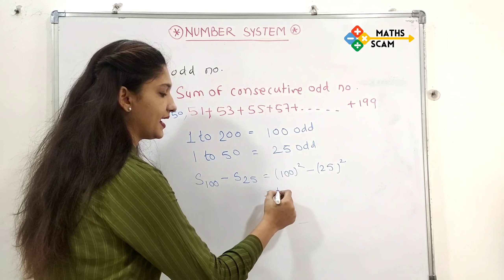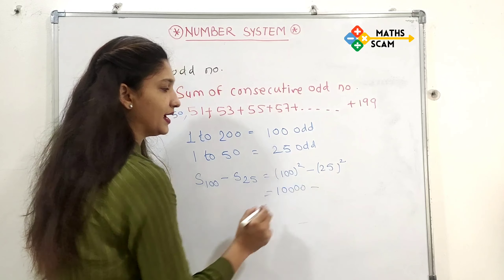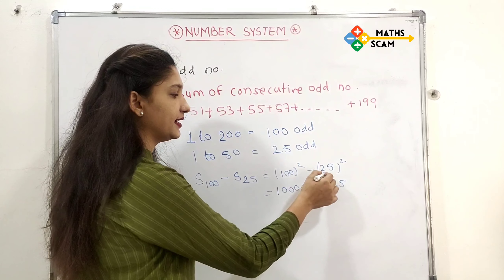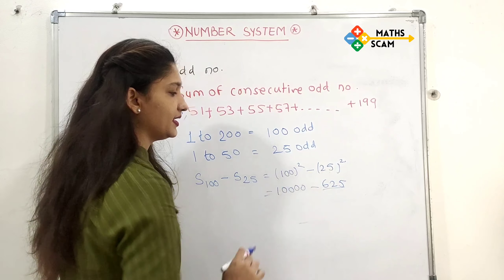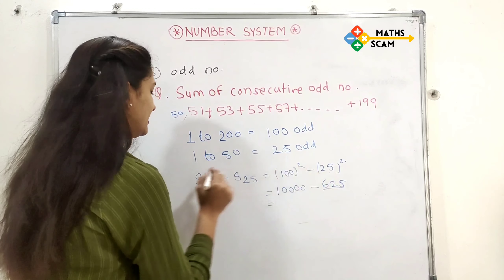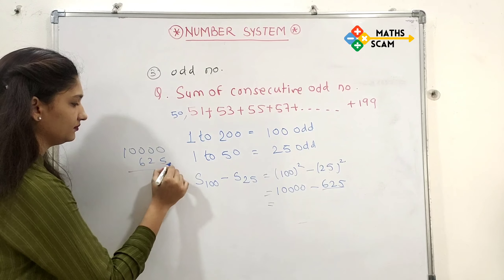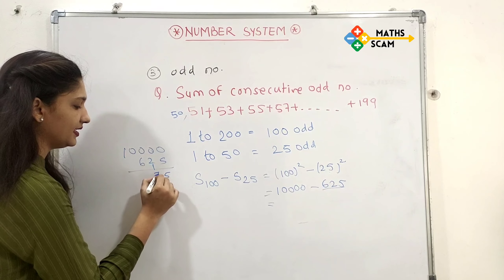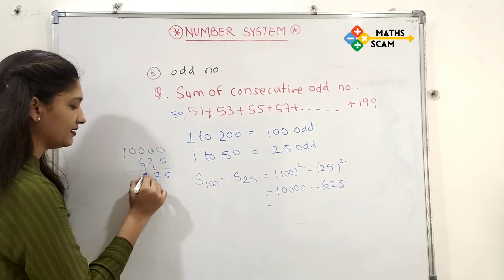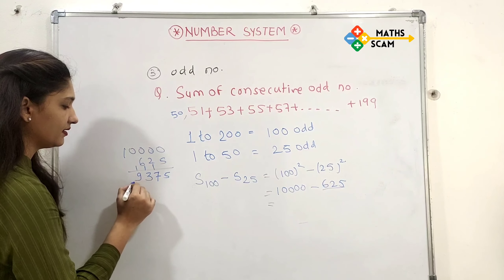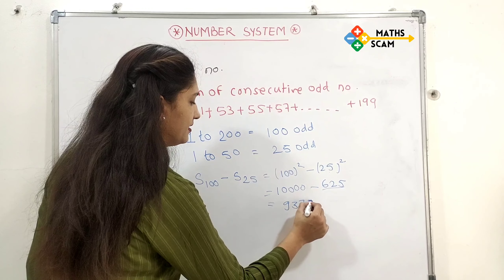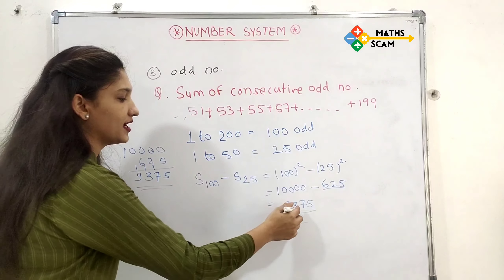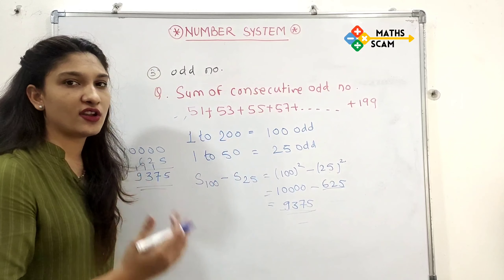100 squared is 10,000 and 25 squared is 625. So 10,000 minus 625: subtracting gives 9375. The sum of the consecutive odd numbers 51 + 53 + ... + 199 is 9375.